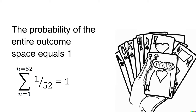Second, the probability of the entire outcome space equals 1. For example, suppose we have 52 possible cards we can draw from the deck, each with 1 in 52 probability. If we draw a single card, the probability that we draw one of those cards is 1/52 + 1/52 + 1/52 and so on, which equals the sum from n=1 to n=52 of 1/52, which equals 1.